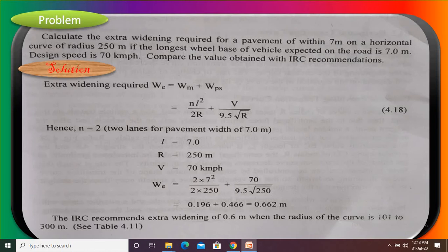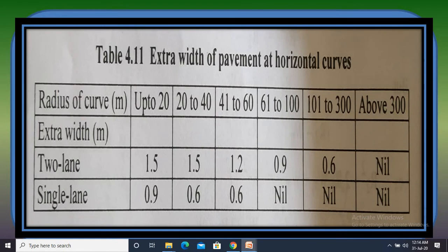For the IRC recommendation, the extra widening of 0.6 meters is recommended when the radius of curvature is 101 to 300 meters. According to the calculated extra widening value of 0.6 meters, we need a radius of curvature in that range. For a 2-lane road, the IRC recommends 0.6 meters of extra widening, corresponding to a radius from 101 to 300 meters. This is the extra width of the pavement at a horizontal curve.